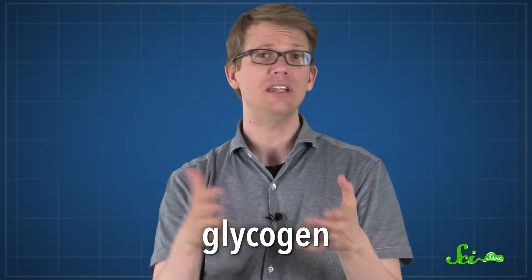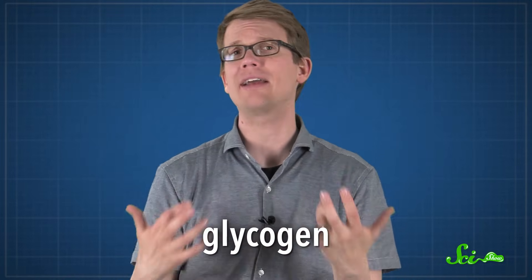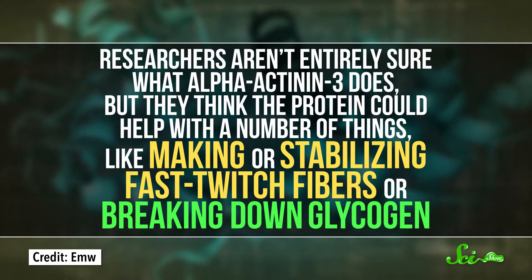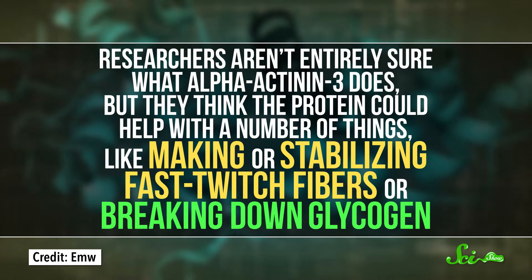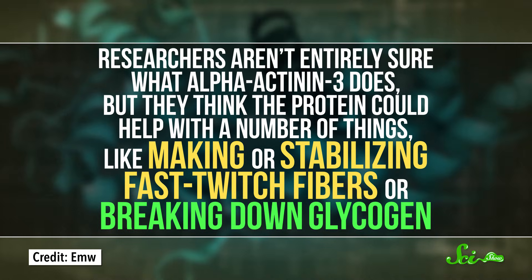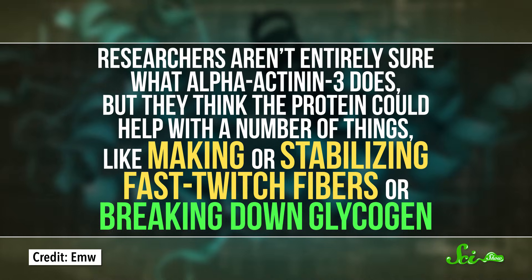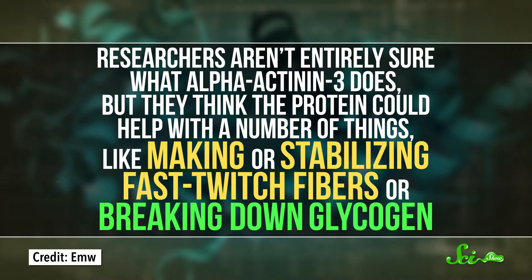And fast-twitch fibers are usually full of proteins that break down the long sugar-storing molecule called glycogen, turning it into glucose and other energy-packed compounds that your muscles need to work. Now, researchers aren't exactly sure what alpha-actinin-3 does, but they think the protein could help with a number of things, like making or stabilizing fast-twitch fibers or breaking down glycogen.